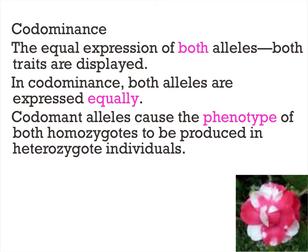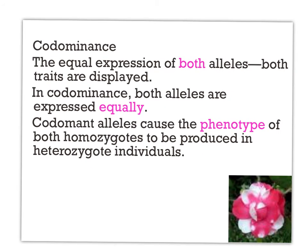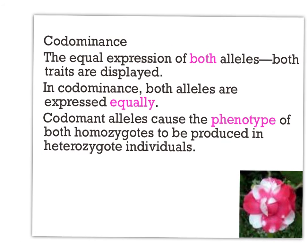Co-dominance is another non-Mendelian genetics case — we see these things a lot, we just don't know what we're looking at. The prefix 'co' means with or together. So with co-dominance you see both colors; they're seen together. It's equal expression.